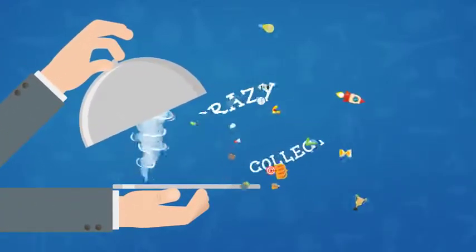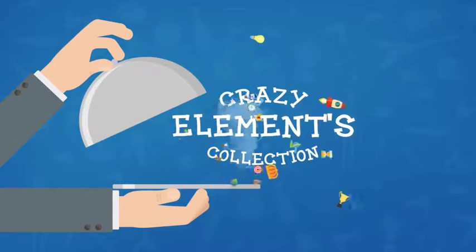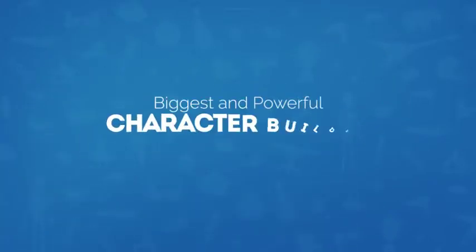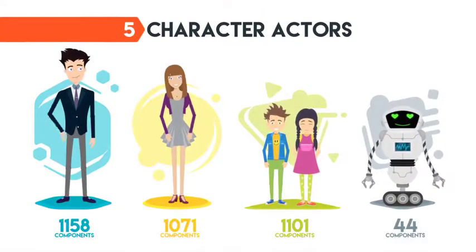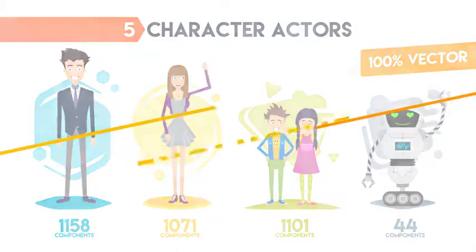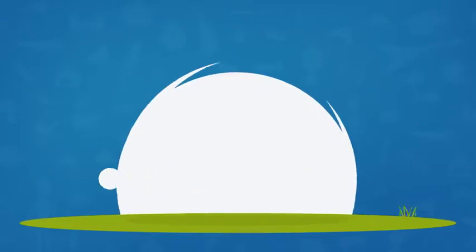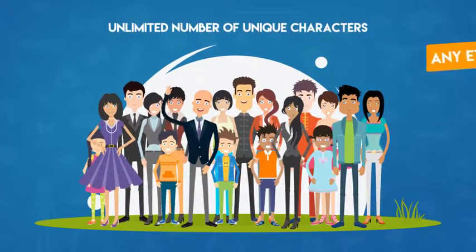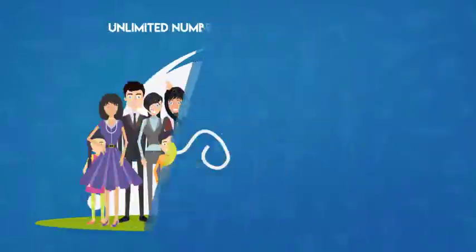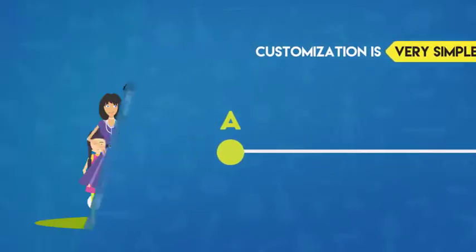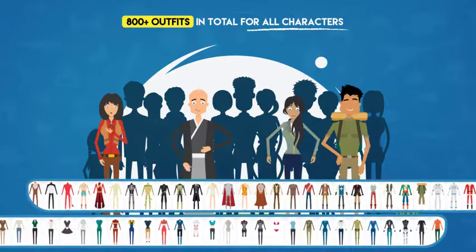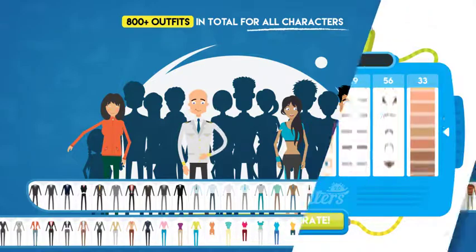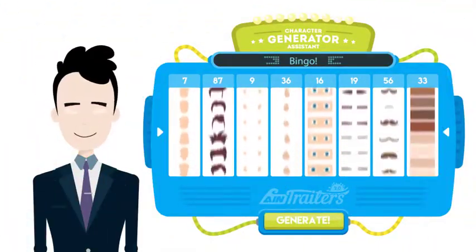The pack contains a crazy collection of unique elements and animations. The biggest and most powerful character builder version 2 — 5 character actors with a lot of components, fully vector. Plus an exclusive bonus of 4 elastic character actors. Create an unlimited number of unique characters of any ethnicity. Customization is very simple, with more than 800 outfits in total for all characters, and a one-click character generation system.